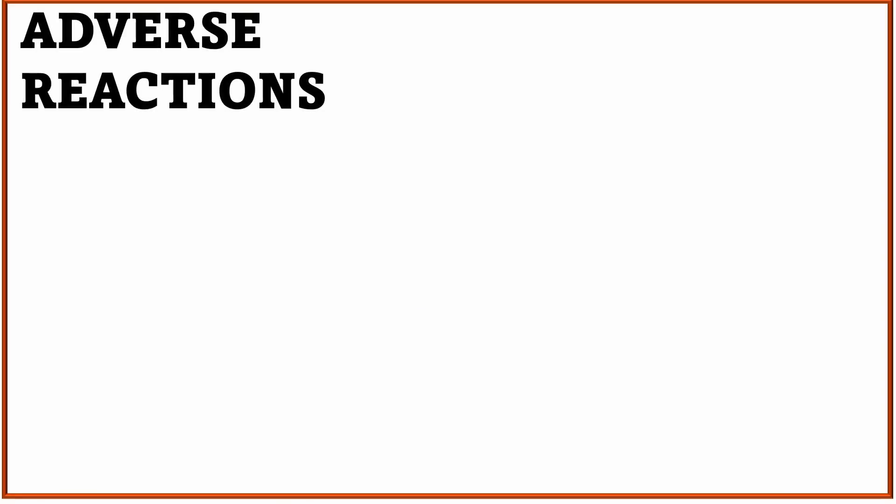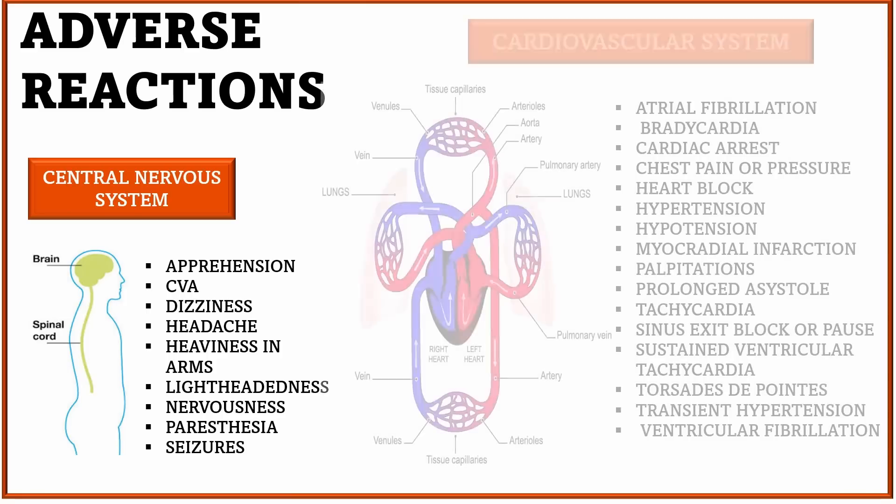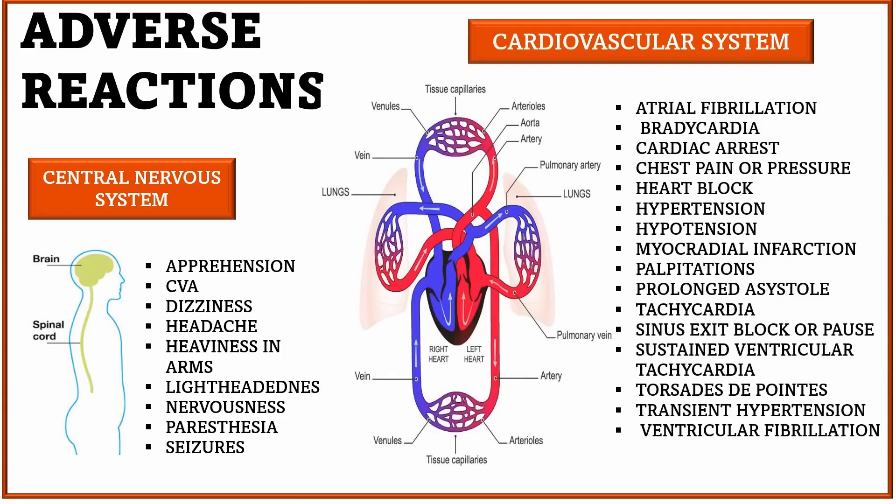Let us see the adverse reactions of Injection Adenosine. Related to the central nervous system, one may experience apprehension, CVA, dizziness, headache, heaviness in arms, lightheadedness, nervousness, paresthesia, seizures, etc.